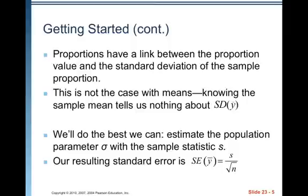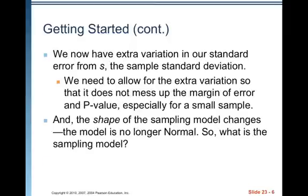In our book, our authors call the individuals y, so we talk about y-bar. In the calculator, we talk about x-bar, which means the sample average of the individual observations. Anyway, the standard error equals s over square root of n. We now have extra variation in our standard error from s, this sample standard deviation.